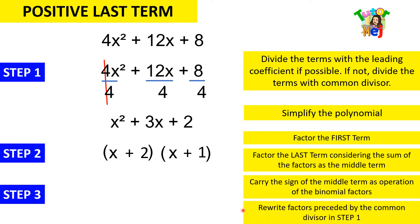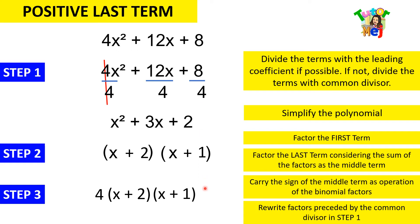For step 3, we simply rewrite the factors preceded by the common divisor from step 1. So the 4 is written out front: 4 times x plus 2 times x plus 1. Therefore, 4x squared plus 12x plus 8 has the factors 4 times (x plus 2) times (x plus 1).